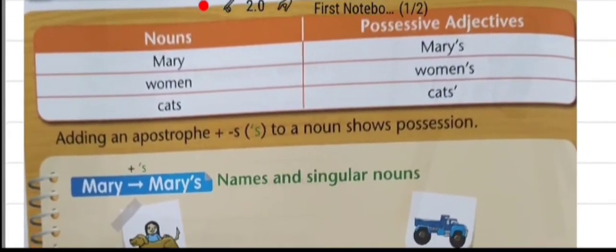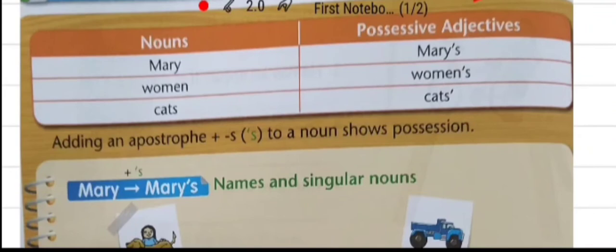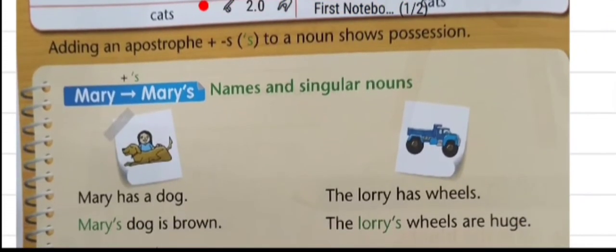Now we are having some rules. A noun can show what it owns or possesses. We add an apostrophe S to a noun to show ownership. A noun that shows ownership or relationship is a possessive noun.